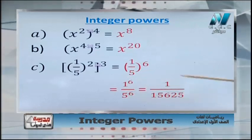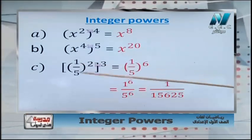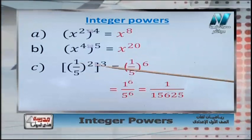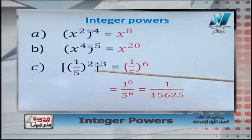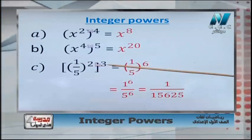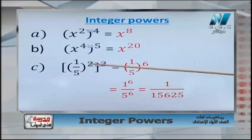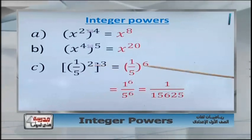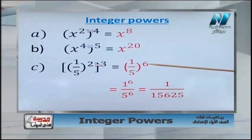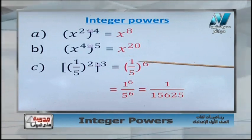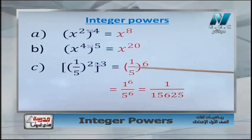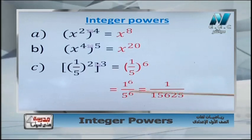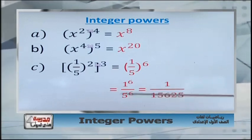Calculate it. To recap: 1 over 5, all power 2, all power 3. Power of the power — our new rule — if we have a power and another power, multiply the two powers: 2 times 3 equals 6. Then distribute the power over the numerator and over the denominator, giving 1 power 6 over 5 power 6, and you get your answer.